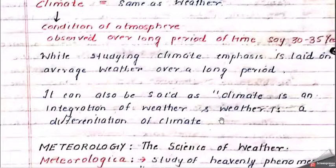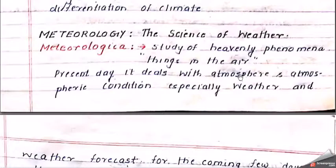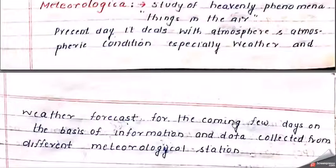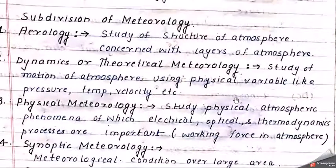If you want to find out climate, you just integrate weather; if you want to find out weather, you just differentiate climate. Now we come to the concept of meteorology. It is the science of weather, derived from the word 'meteorologia' — a study of heavenly phenomena, things in the air. Presently it deals with the atmosphere and atmospheric conditions, especially weather. We use meteorological data for weather forecasting — to predict whether a cyclone will occur, whether rain will come — based on data collected from different meteorological stations.